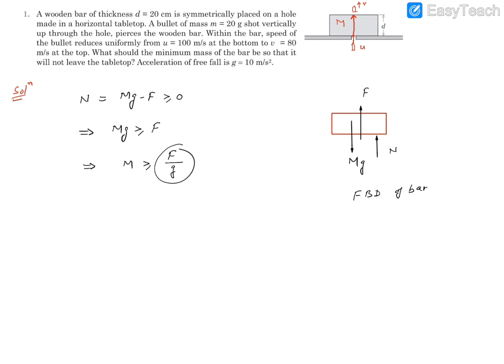The bullet experiences a retarding force or acceleration in the downward direction. Since it is uniform, we can apply the basic equation and find the acceleration value. We know the distance d, so let's use the third equation of motion.